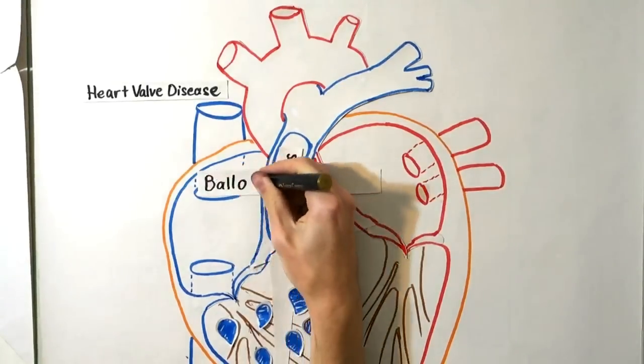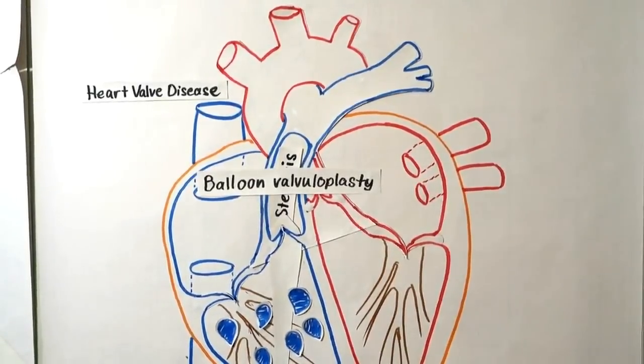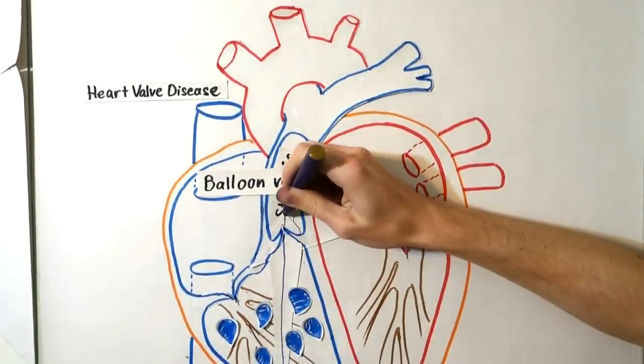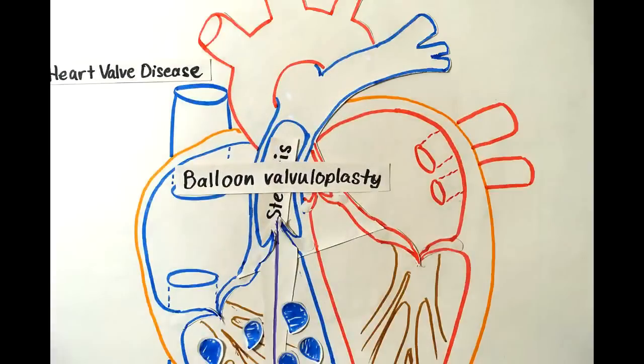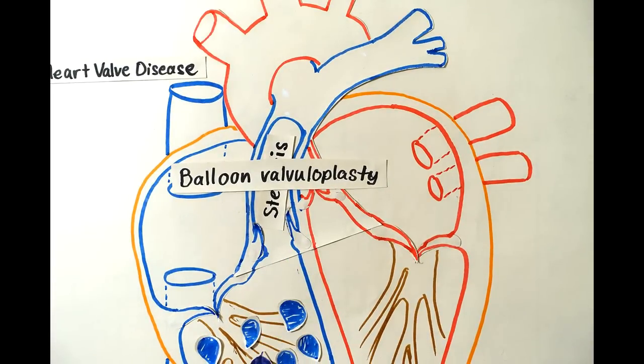Balloon valvuloplasty is a minimally invasive repair procedure used to reduce the effect of stenosis. A balloon catheter is inserted into a blood vessel, fed into the heart. The end of the catheter is inflated when placed into the valve, crushing plaque and returning the valve to its full functioning capacity.